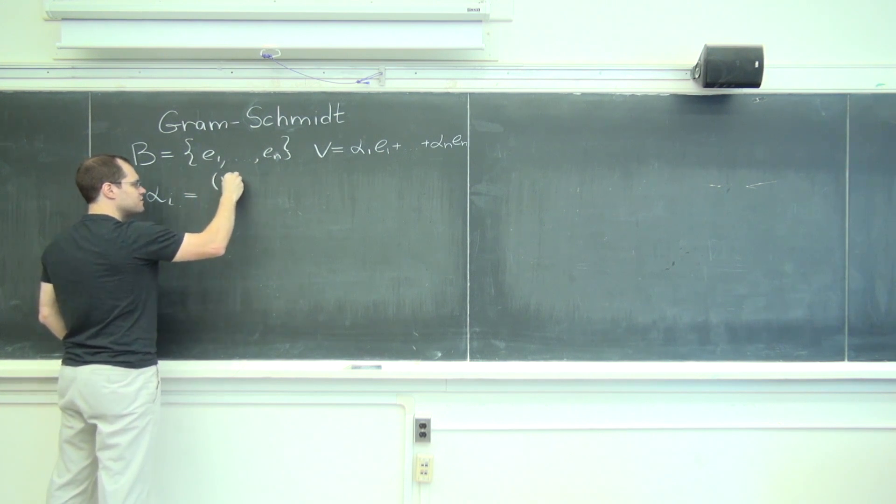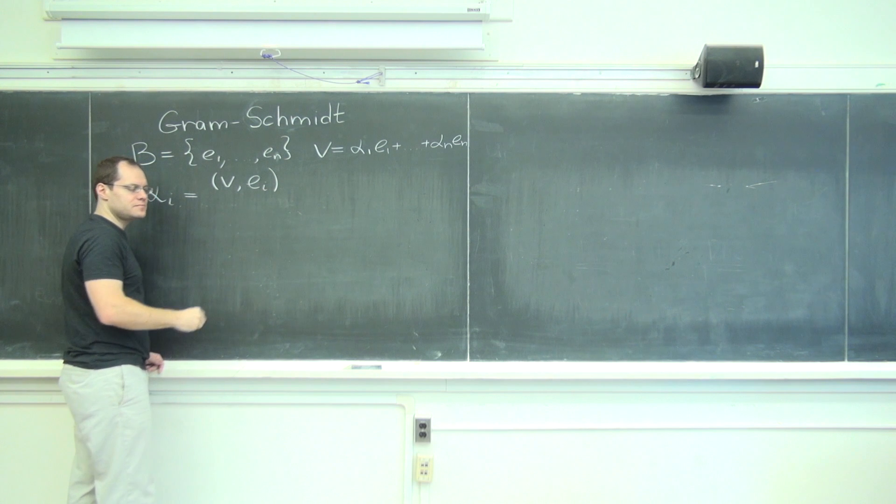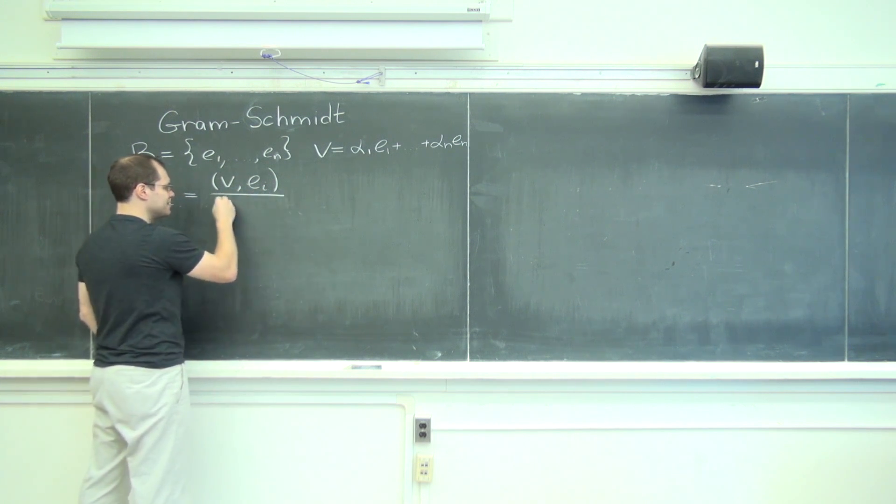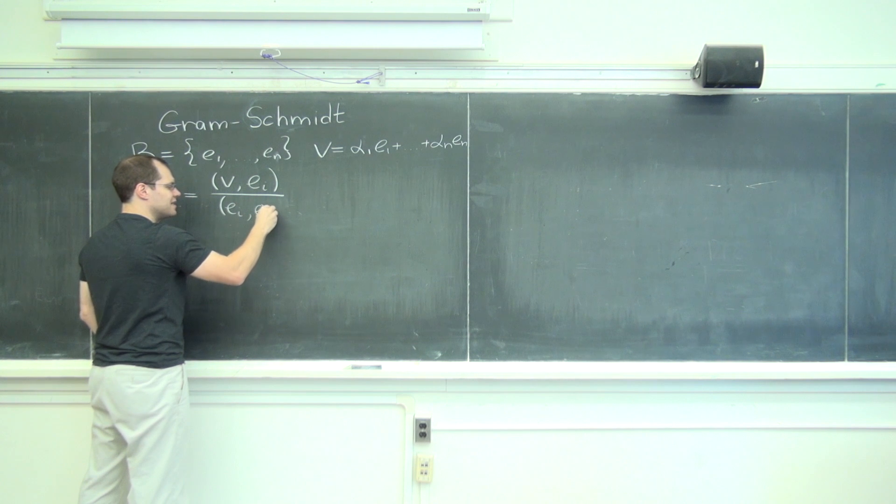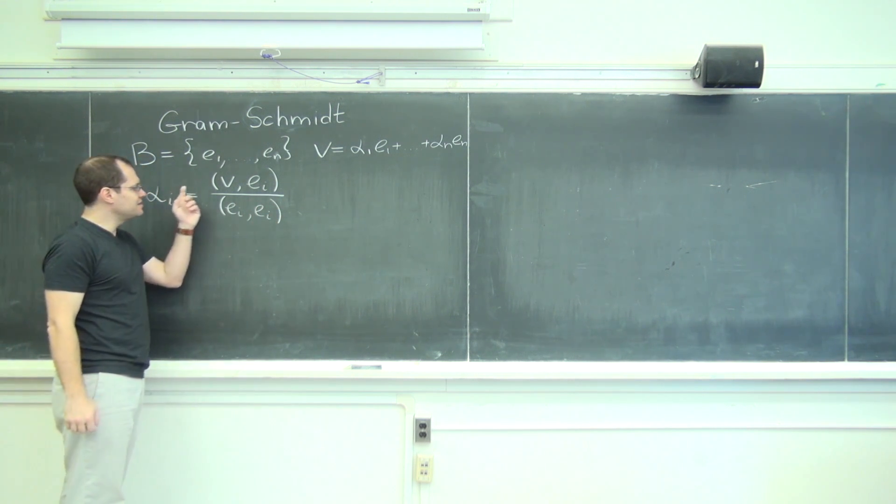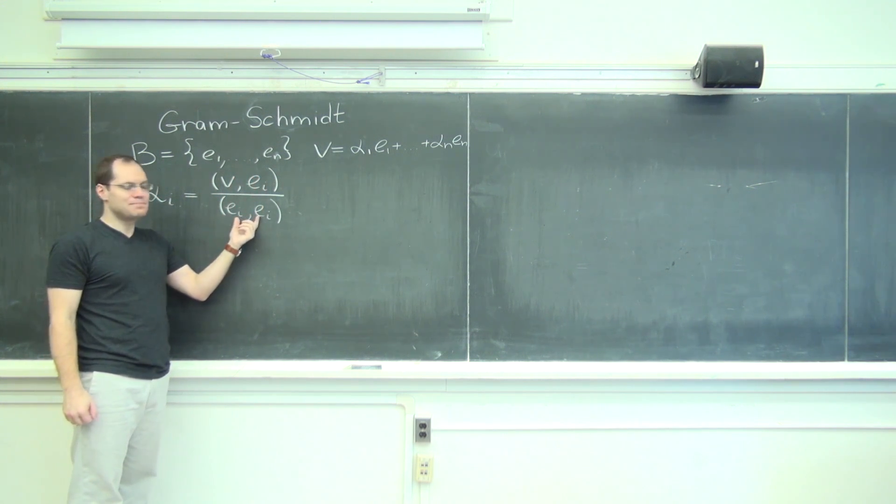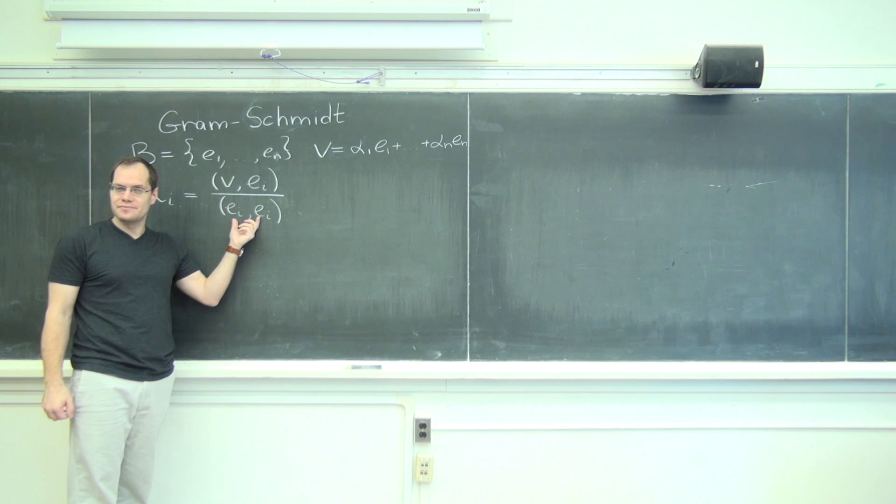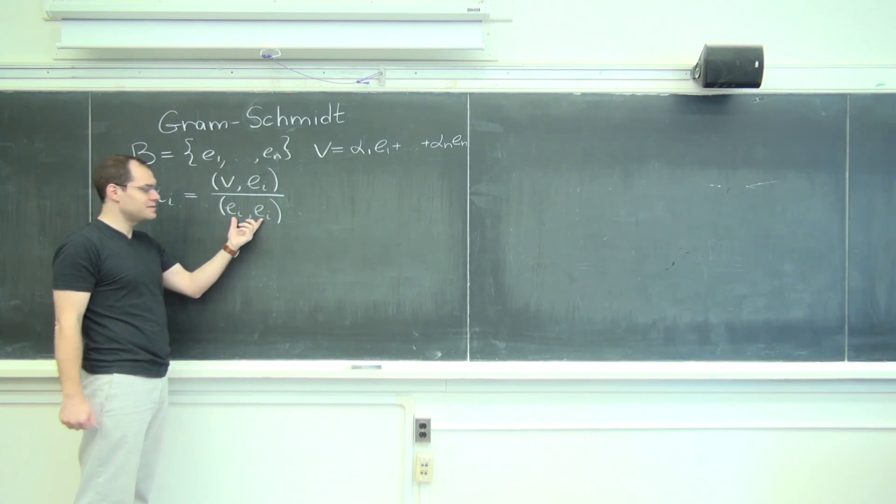As we've discovered, you just have to dot v with e_i and divide by the dot product of e_i with itself, the i-th vector. So the i-th coefficient is the inner product of v with the corresponding element of the basis divided by, can we say length squared of that element? Yes we can. Length comes from the inner product.